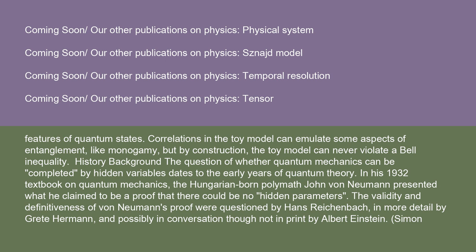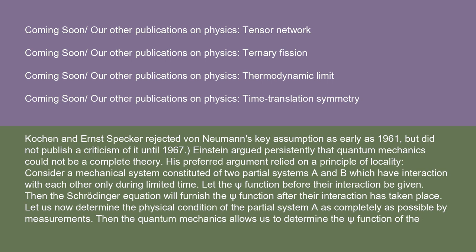The question of whether quantum mechanics can be completed by hidden variables dates to the early years of quantum theory. In his 1932 textbook on quantum mechanics, the Hungarian-born polymath John von Neumann presented what he claimed to be a proof that there could be no hidden parameters. The validity and definitiveness of von Neumann's proof were questioned by Hans Reichenbach, in more detail by Greta Hermann, and possibly in conversation — though not in print — by Albert Einstein. Simon Kochen and Ernst Specker rejected von Neumann's key assumption as early as 1961, but did not publish a criticism of it until 1967.